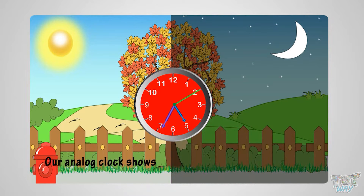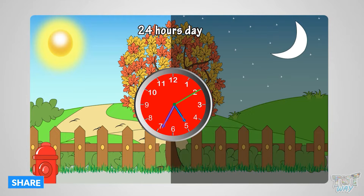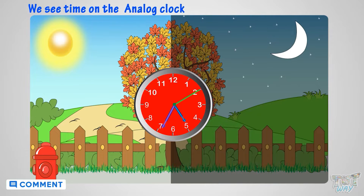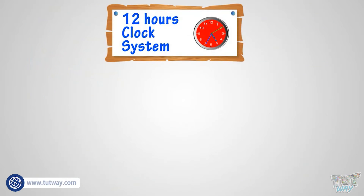Our analog clock shows 12 hours numbered from 1 to 12. So how do we use an analog clock to see the time of a 24-hour day? Have you ever wondered? We see time on an analog clock using the 12-hour clock system. Let's try to understand this 12-hour clock system.